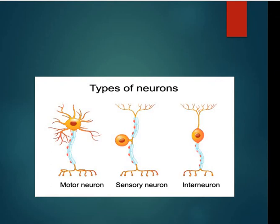There are different types of neurons: sensory neurons, interneurons, and motor neurons. Motor neurons carry the message or impulse to the muscles. Sensory neurons receive messages from different parts of the body. Interneurons connect both sensory and motor neurons. In the peripheral nervous system, there are only motor neurons and sensory neurons present.